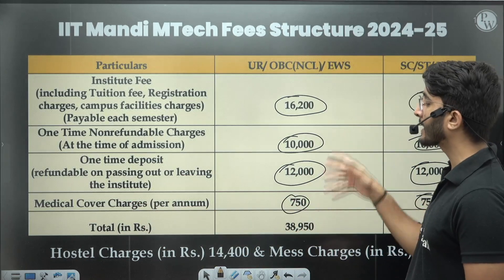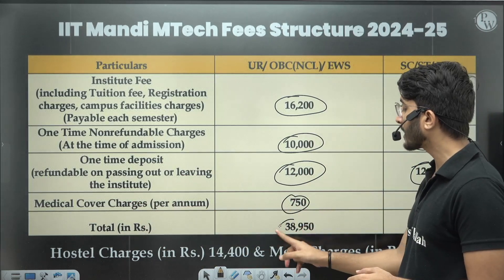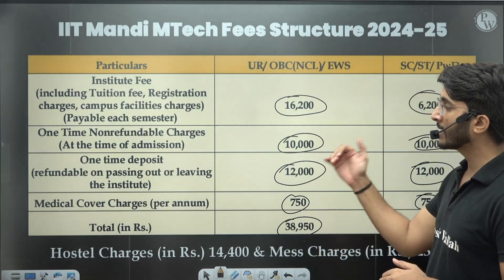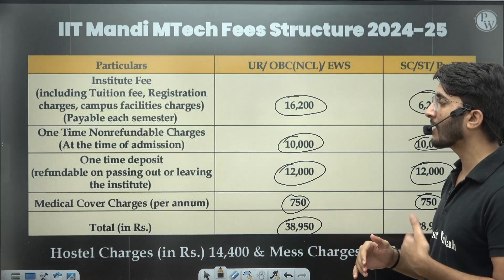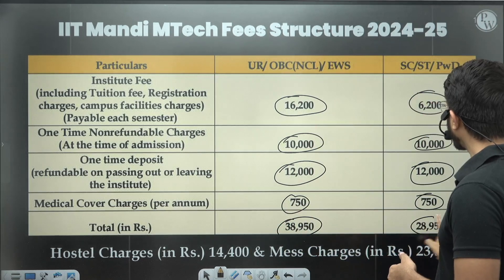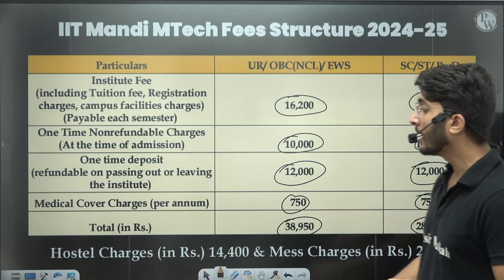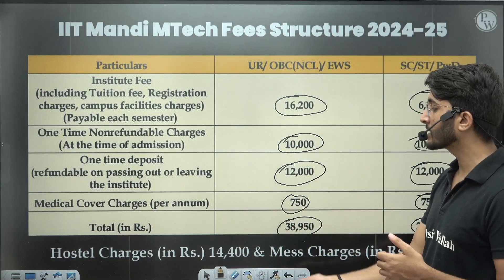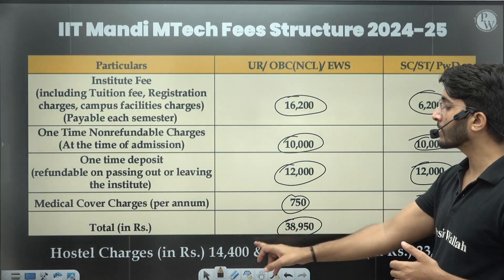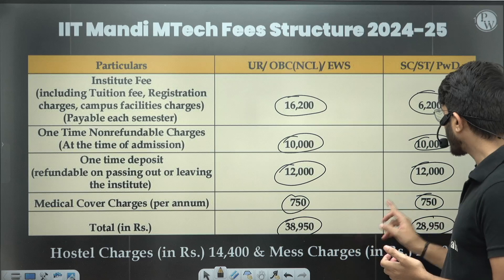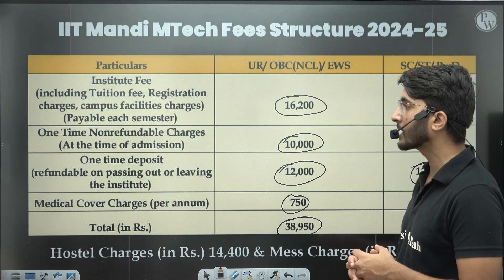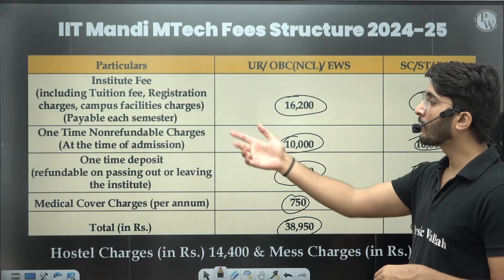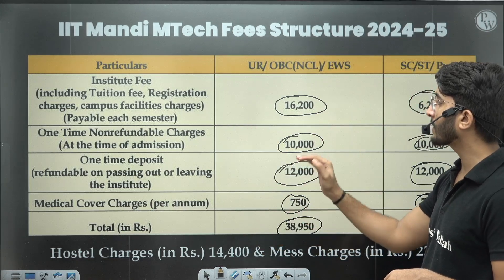The total amount you need to pay in your first semester is ₹38,950, and ₹28,950 for SC/ST/PwD. Apart from this, you will also need to pay hostel charges if you want accommodation — ₹14,400 for hostel charges and main charges of ₹23,300. Excluding the one-time refundable fees, this is your actual amount payable each semester.